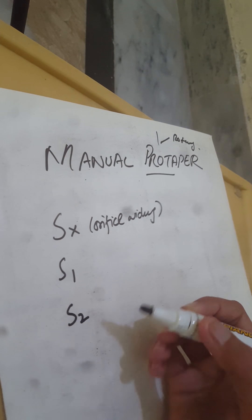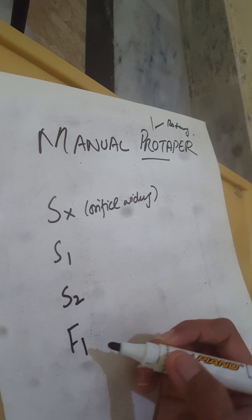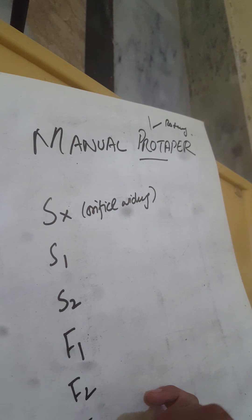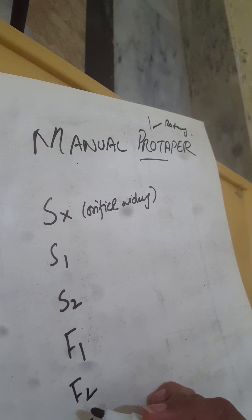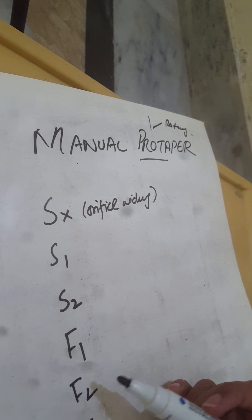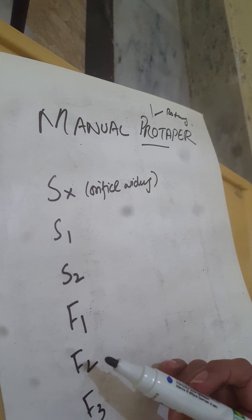F represents the finishing files and S is the shaping files. First we have to do the shaping and then we use the finishing files.